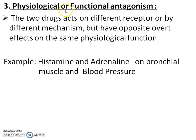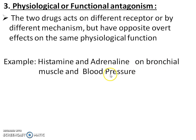In physiological or functional antagonism, two drugs act on different receptors or by different mechanisms but have opposite effects on the same physiological functions. For example, histamine and adrenaline show effects on bronchial muscle and blood pressure. Histamine shows its effect through H1, H2, H3, and H4 receptors — it contracts the bronchial muscle and decreases blood pressure — whereas adrenaline acts through alpha and beta receptors and dilates the bronchial muscle and increases blood pressure.